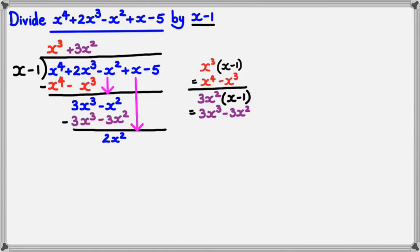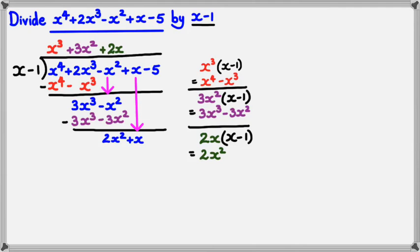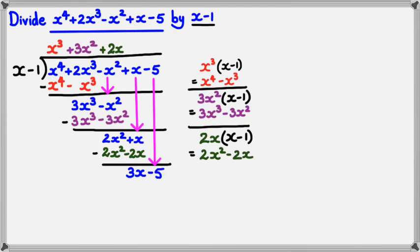Bring the next term down, which is plus x. And, of course, in the quotient I need to multiply by 2x so that I can get rid of 2x squared. Moving along, you're going to have 2x times x minus 1 equals 2x squared minus 2x. Putting this line back in, I've got 2x squared minus 2x. I've got to subtract the two terms again. 2x squared take away 2x squared is 0. Plus x minus minus 2x would equal 3x. And now I need to bring down the minus 5. So, it's 3x minus 5.